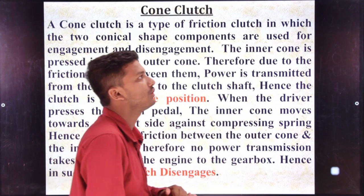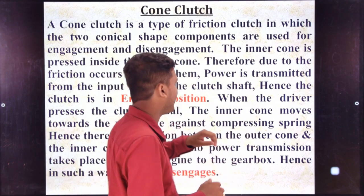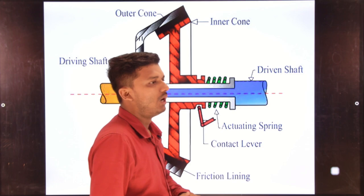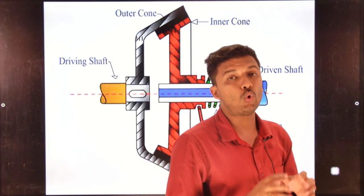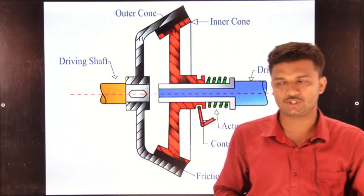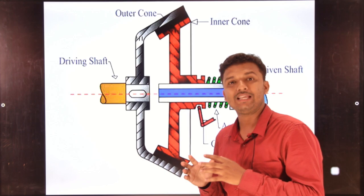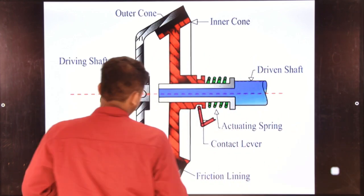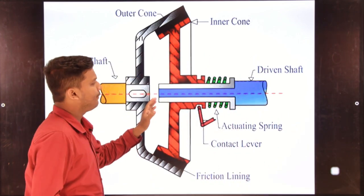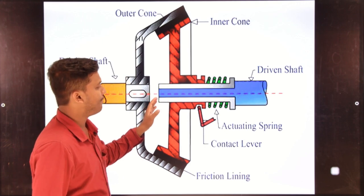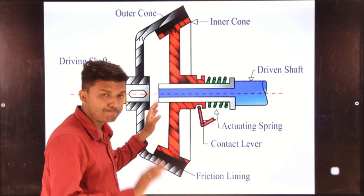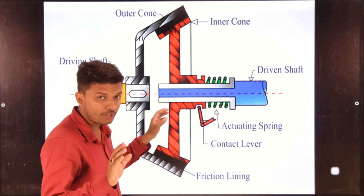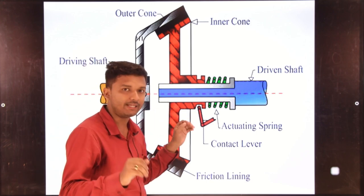In the cone clutch system, the clutch is engaged when you release the clutch pedal. At that time it goes into the engaged position. When you press the pedal it is disengaged; when you release the pedal, it engages.